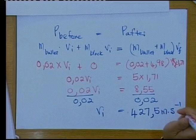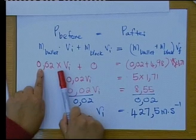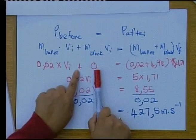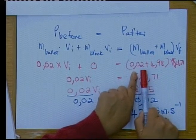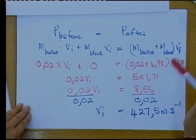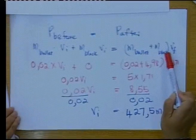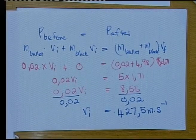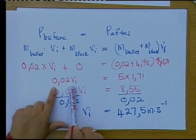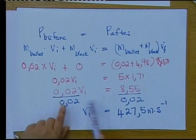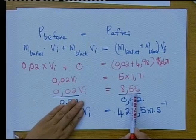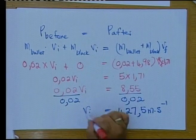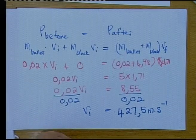To confirm: p before equals the mass of the bullet times velocity of the bullet, plus the block which is stationary so 4.98 times 0 is 0. The mass of the bullet is 0.02 and the block is 4.98. Their combined velocity from the previous example is 1.71. Multiplying out gives 0.02 times vi equals 5 times 1.71, which is 8.55. Dividing both sides by 0.02 gives vi equal to 427.5 m/s.